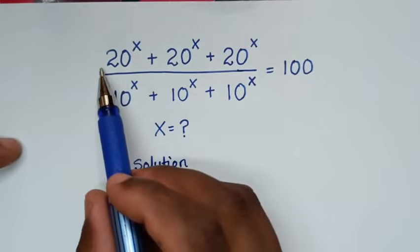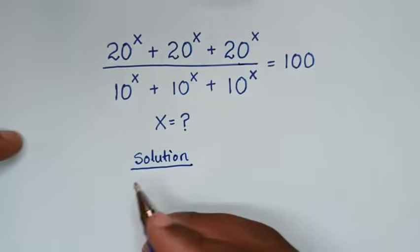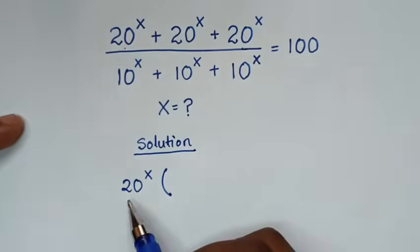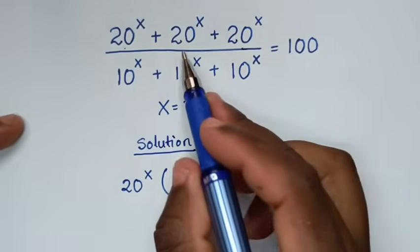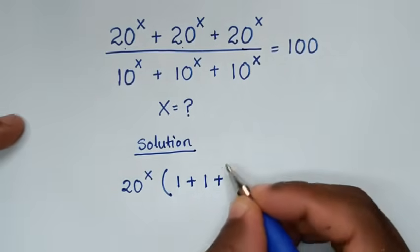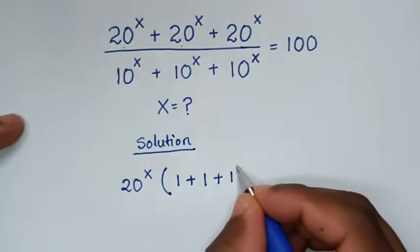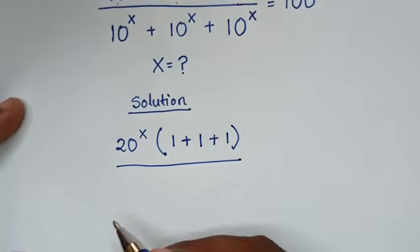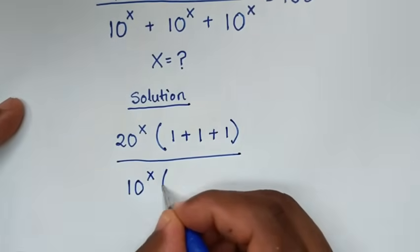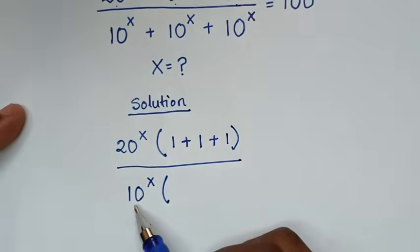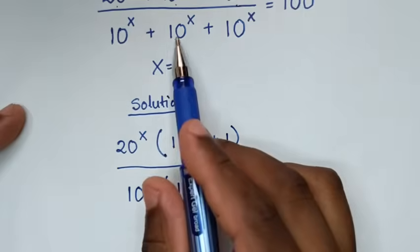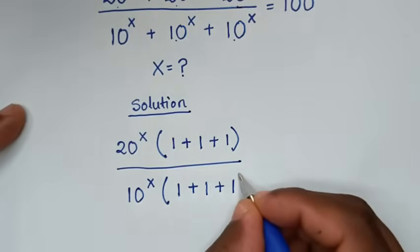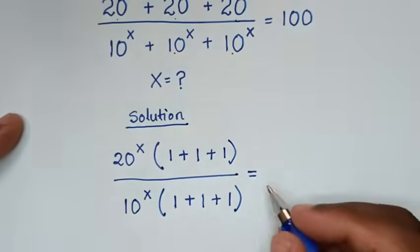From our problem, in the numerator, 20 power x is common, so we take out 20 power x outside the bracket. Then 20^x divided by 20^x is 1, plus 1, plus 1. In the denominator, 10 power x is common, so we take out 10 power x outside the bracket. Then 10^x divided by 10^x is 1, plus 1, plus 1. This is equal to 100.